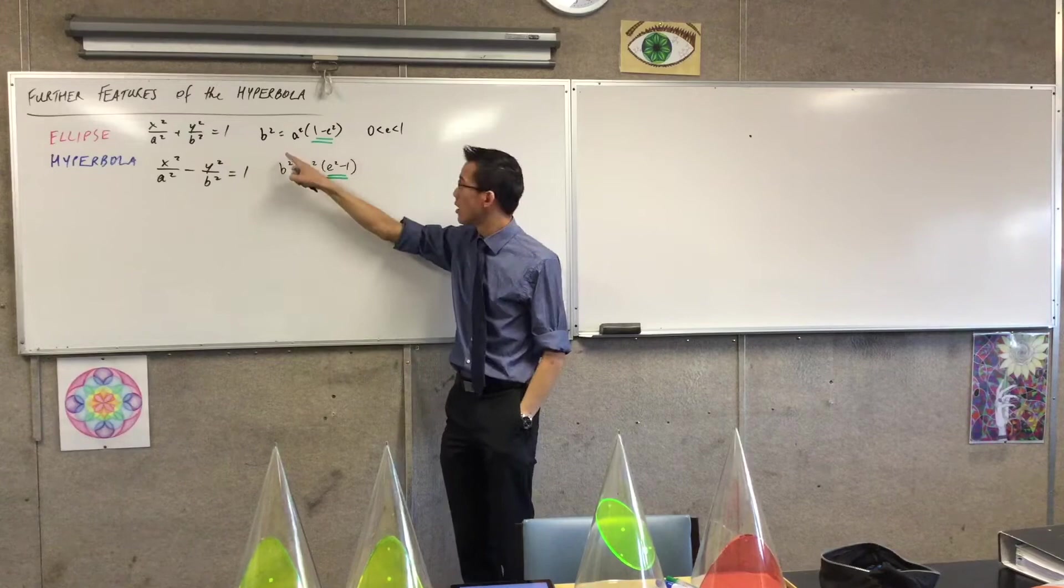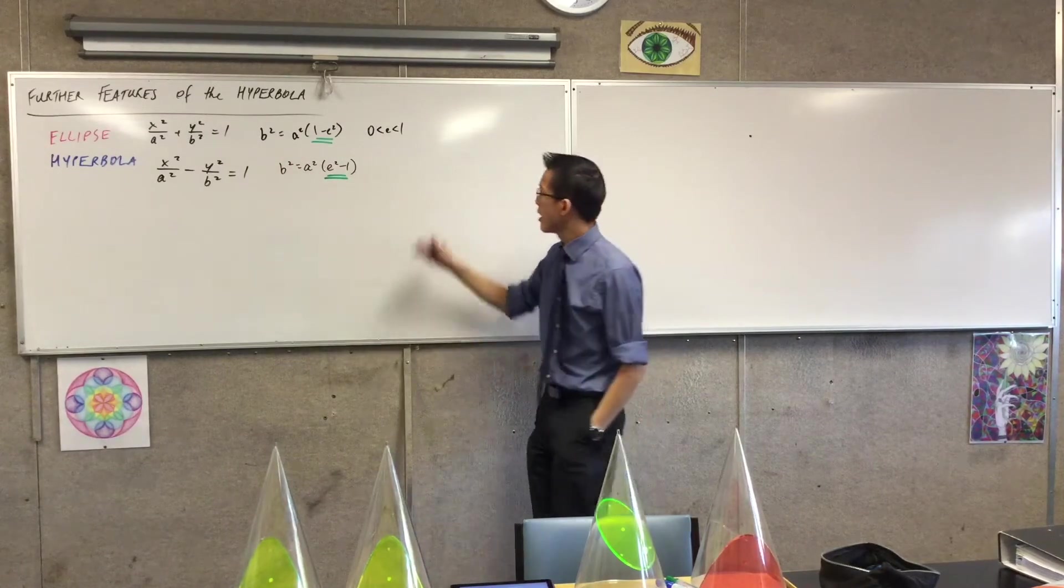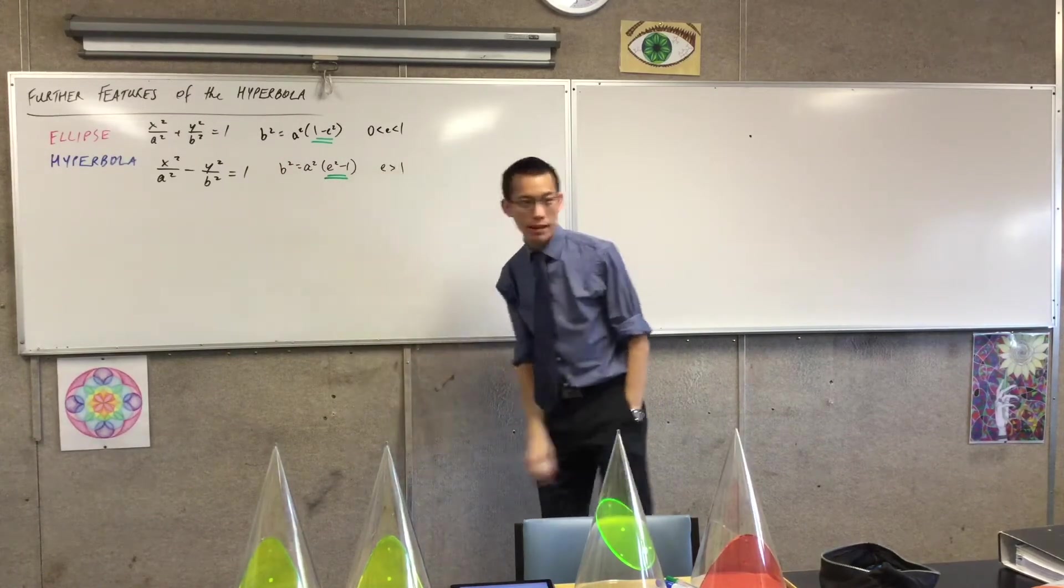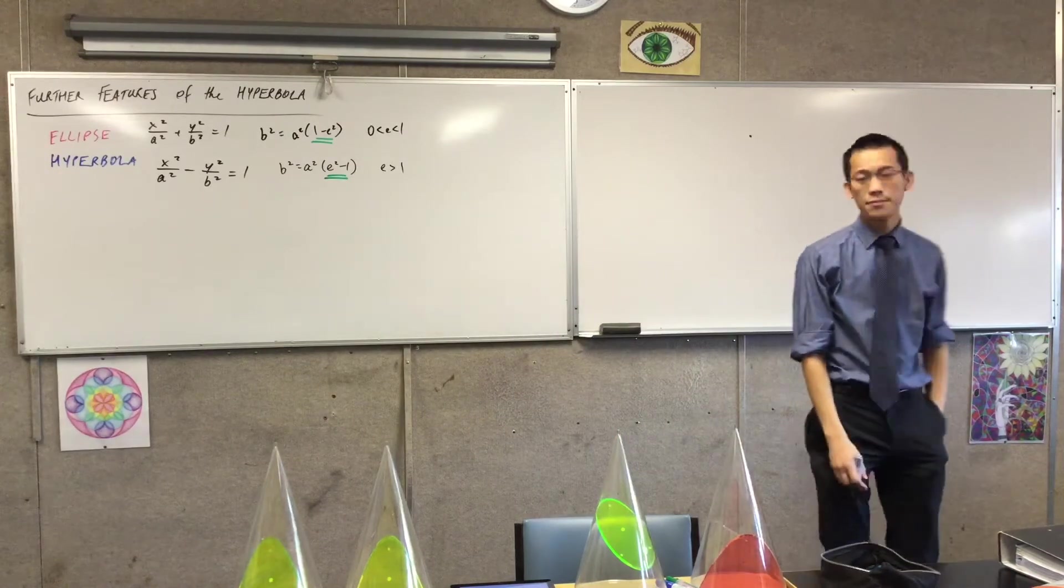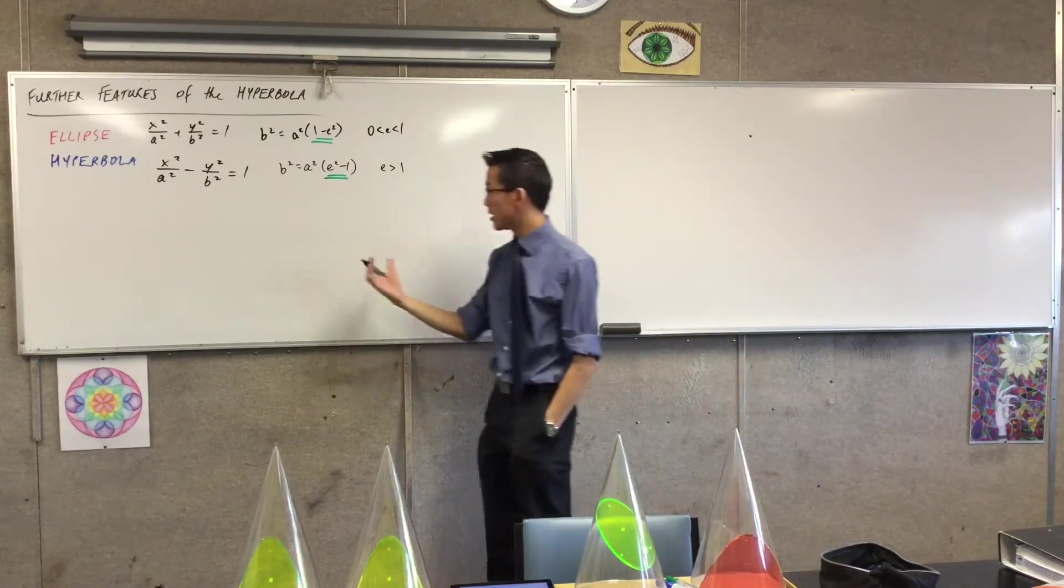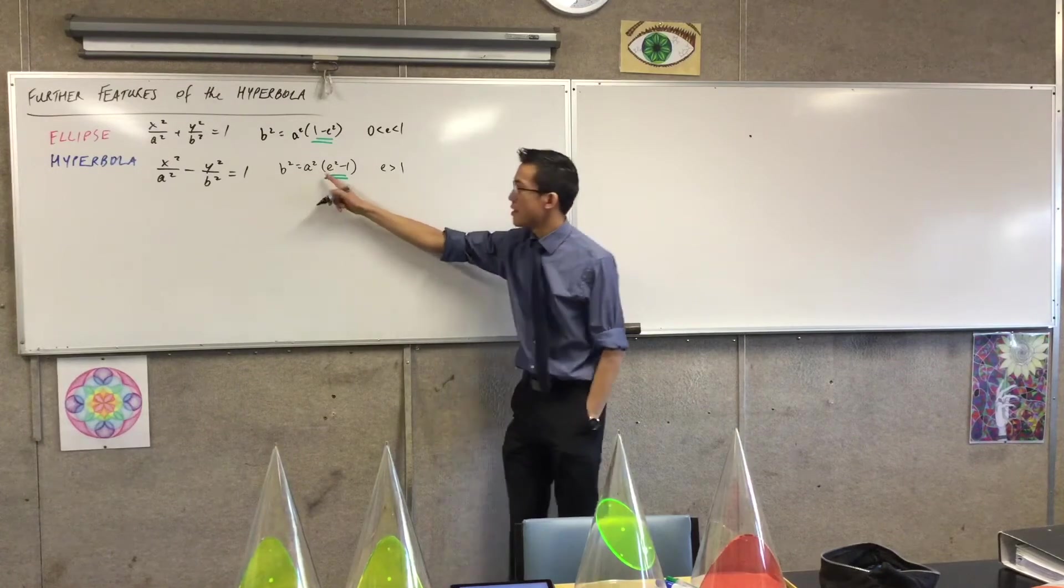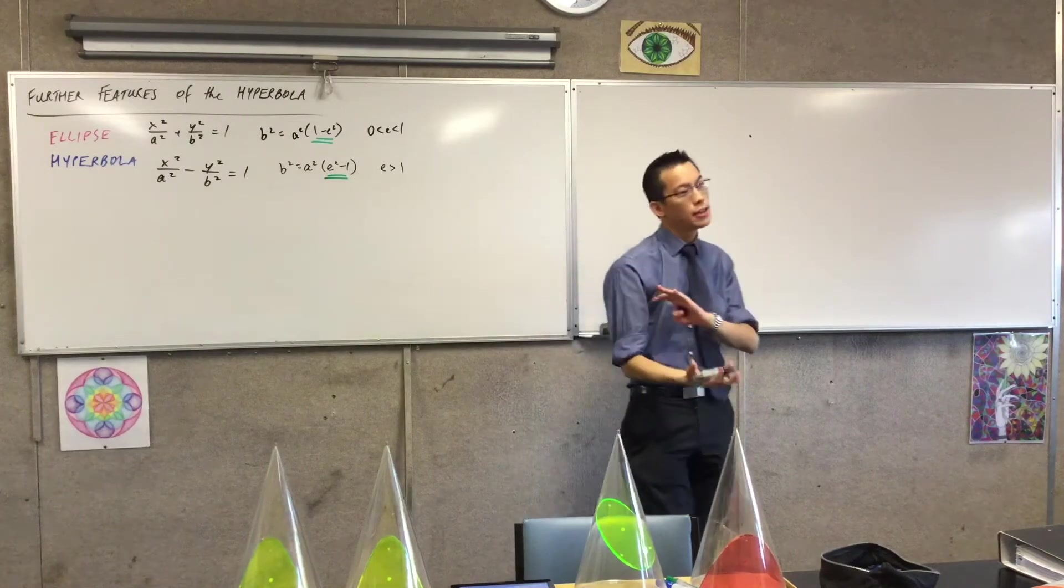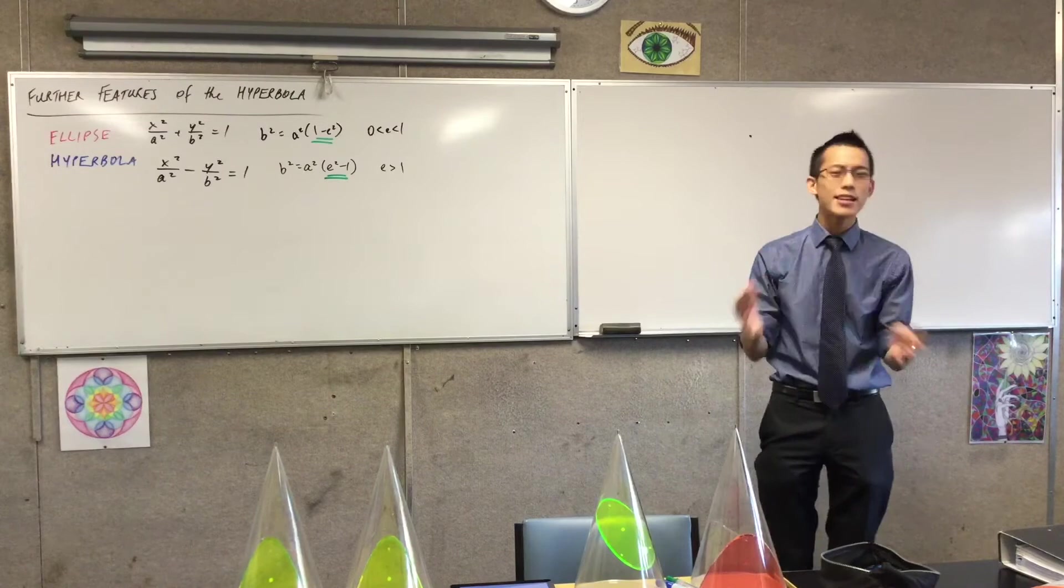And so in order for everything to stay positive here you're going to have one minus e squared, whereas if e is going to be some big number like two or three or five hundred, then in order for things to stay positive, really for b to stay positive, b squared, then e squared has to be up the front, okay? Please get that there's meaning behind this order. Do not memorize these as meaningless algebraic statements, okay?